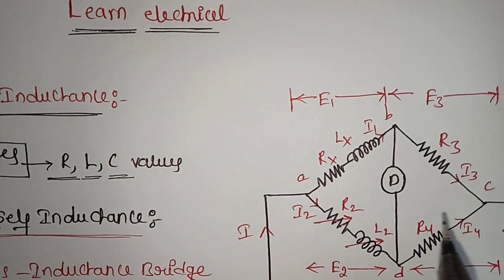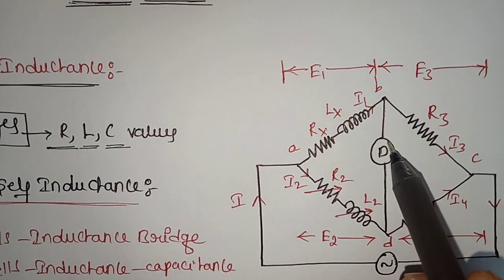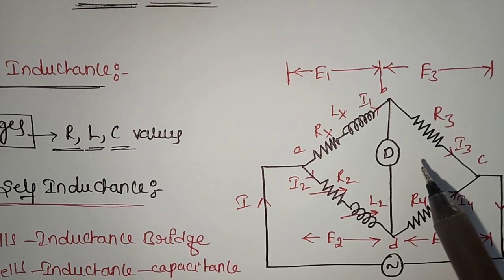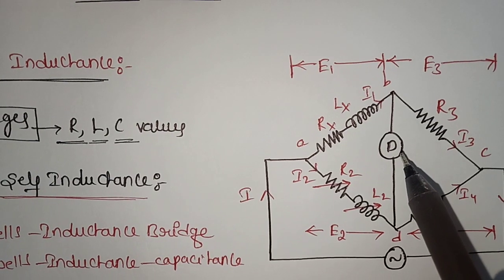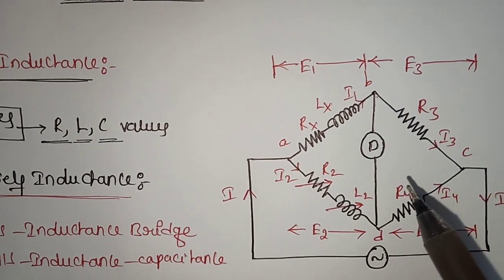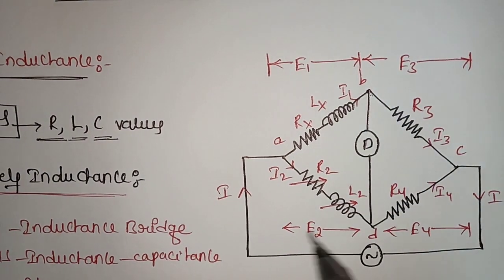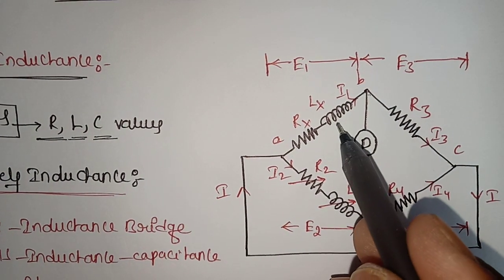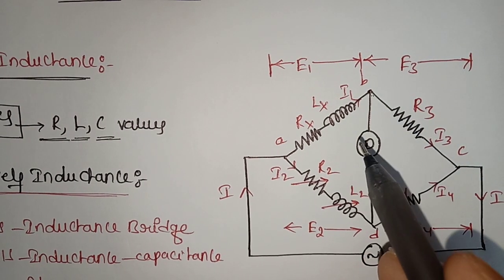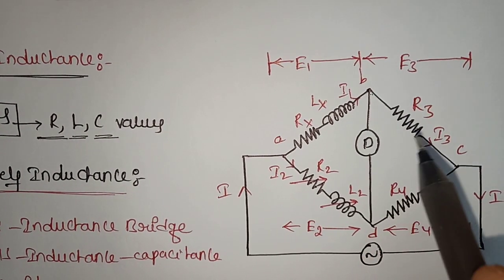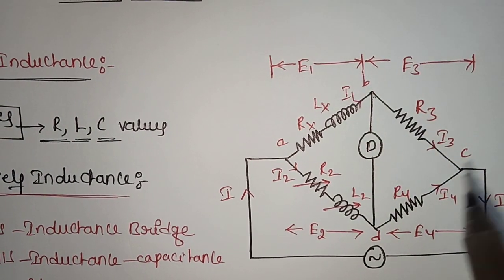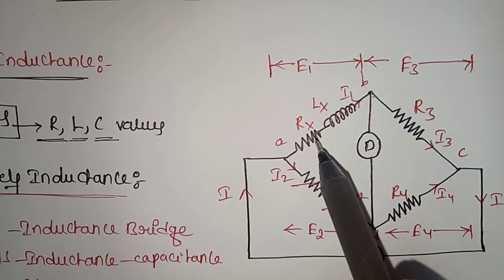In AC bridges, we have to replace the DC galvanometer with a vibrational galvanometer, or we can use headphones in place of a vibrational galvanometer. In AC bridges, inductances are added to resistances and capacitances. Here we have to measure the values of inductance, so inductance values are added to the resistance values.